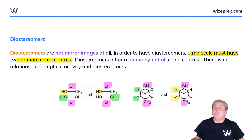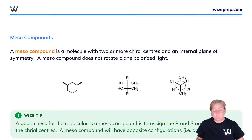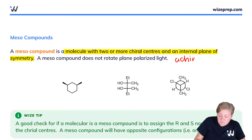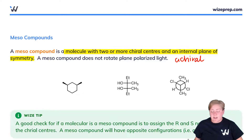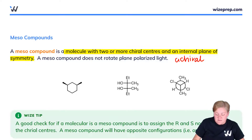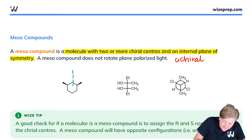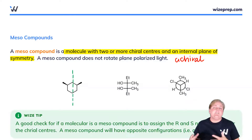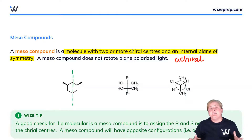Let's look at the last example: the meso compound. A meso compound is a specialized molecule — it has two or more chiral centers and an internal plane of symmetry. A meso compound has chiral centers but is itself achiral because it does not rotate plane polarized light. To identify a meso compound, we need to be able to fold the molecule in half, drawing an internal plane of symmetry to make what we call the molecule sandwich. Folding in half with all the same groups sitting on top of each other — the two methyl groups pointed up, the CH2 groups the same — this is indeed a meso compound.